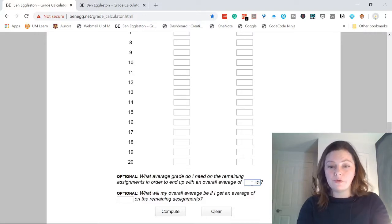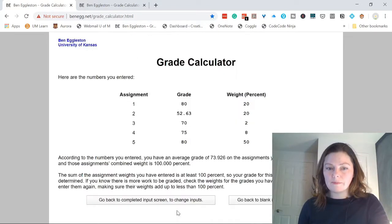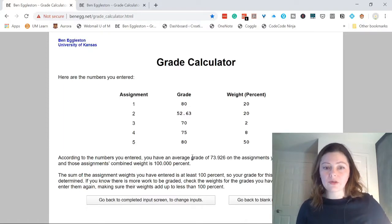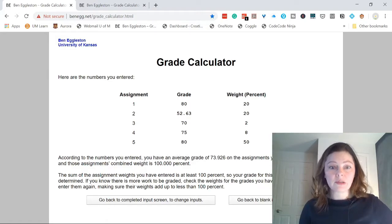If, let's say, I want to do 90, if I want to get an A+, I put in the 90, and it will show me something very interesting. Look, according to the numbers you have entered, you have an average grade, and blah, blah, blah, on the assignments you have completed so far.